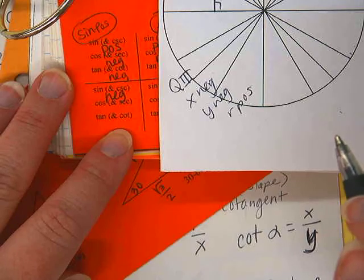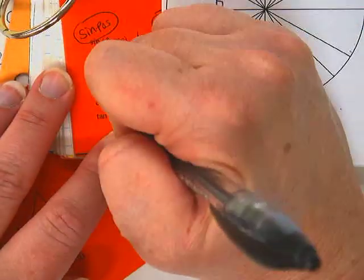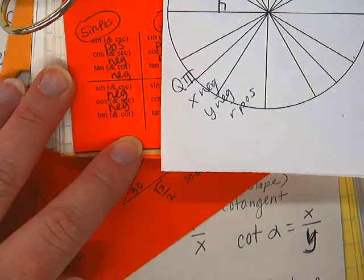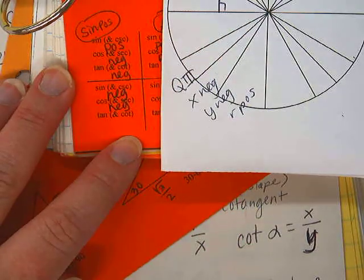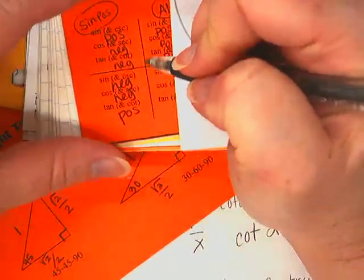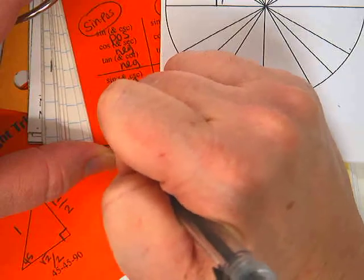Cosine would be x over r, which is a negative over a positive, so that will be negative. Tangent will be y over x, which is a negative over a negative. Positive. How many of you were thinking they were all going to be negative?